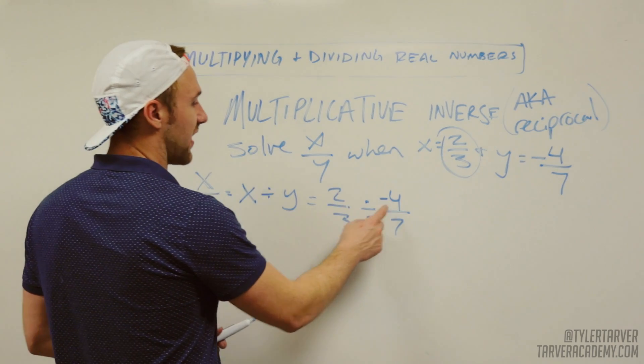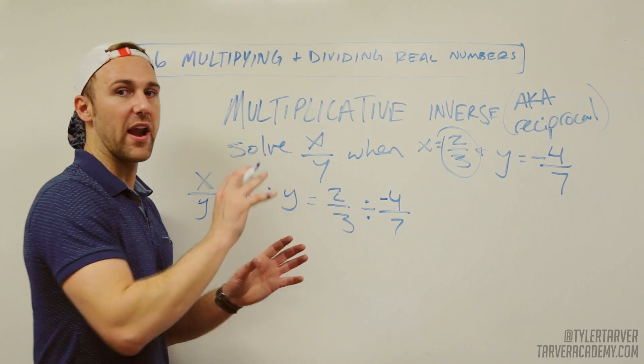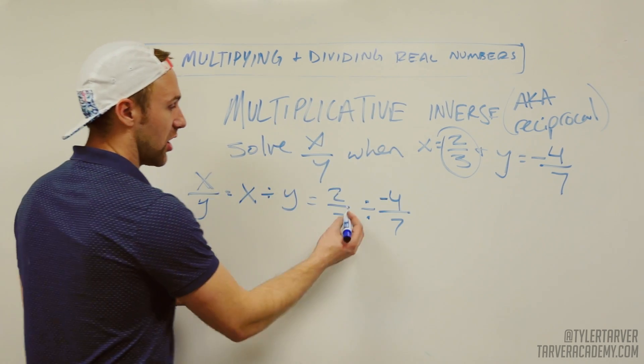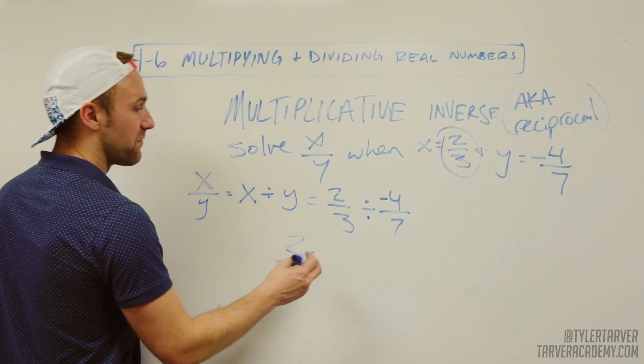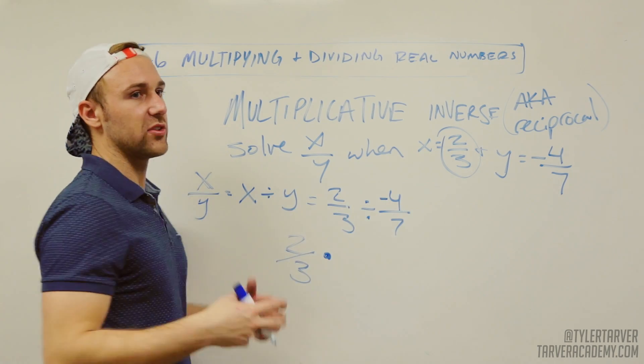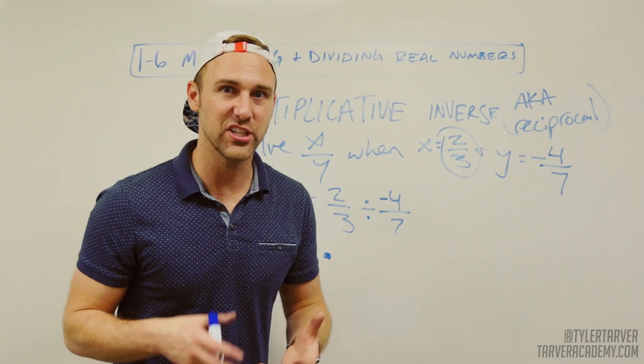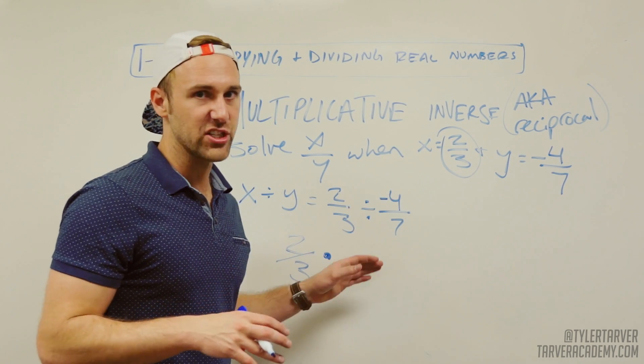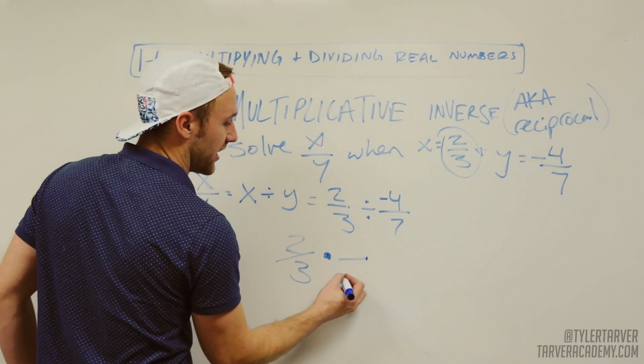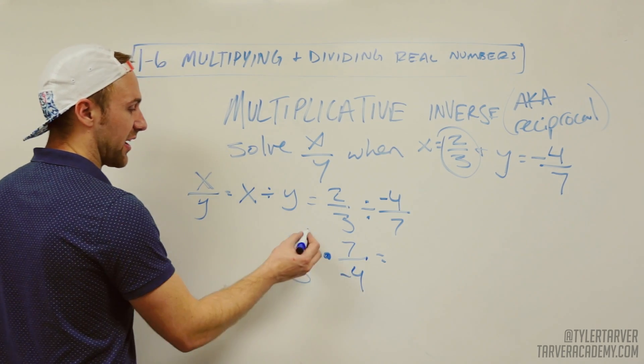For instance, I've got 2 thirds divided by negative 4 over 7. I can turn that into 2 thirds times, but I have to use the reciprocal, the multiplicative inverse. So I'm gonna rewrite it: 2 over 3, I'm gonna make it multiply, but I have to flip it. There has to be like a sacrifice for switching division to multiplication - you can't just change the problem, but you can change it to multiplication if you flip it. So now negative 4 goes from the top to the bottom and the 7 goes to the top.